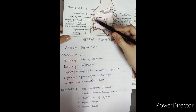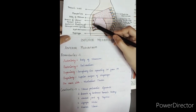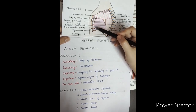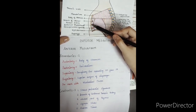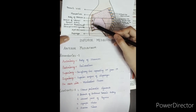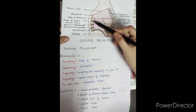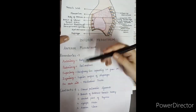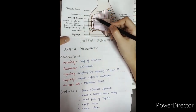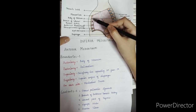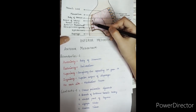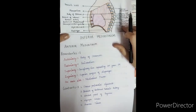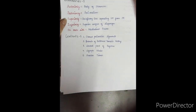If we look at the contents of the anterior mediastinum: first, the sternopericardial ligament connecting the sternum to the pericardium. Then we have a branch of the internal thoracic artery. Then comes the lowest part of the thymus — so the lowest part of the thymus is present in the anterior mediastinum. After that, there are lymph nodes present.